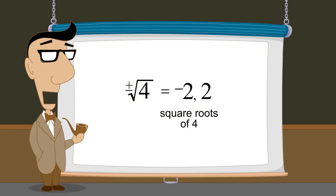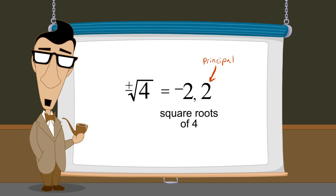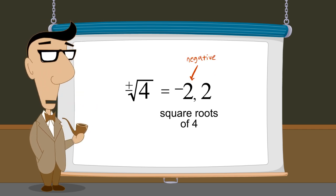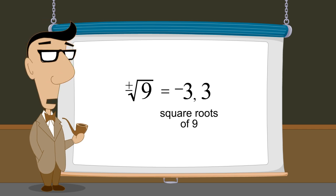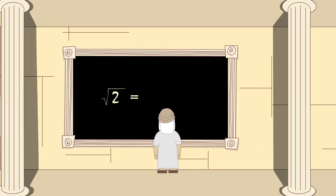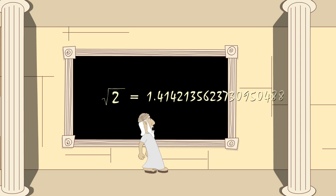Any positive number has two square roots: the principal square root, which is always positive, and the negative of the principal square root. For example, nine has square roots three and negative three. Numbers like nine and four, whose square roots are integers, are called perfect squares. However, the square roots of most numbers don't come out even. In fact, most square roots have an infinite number of non-repeating digits after the decimal point.